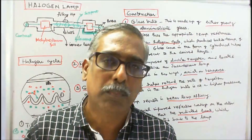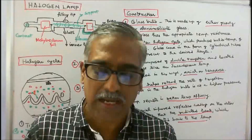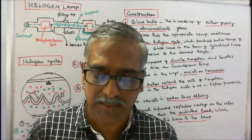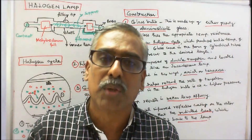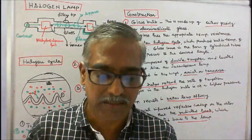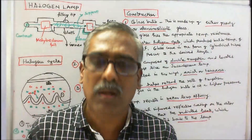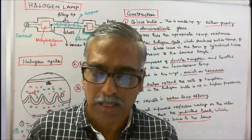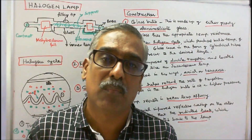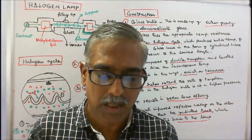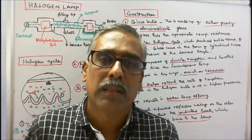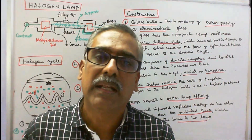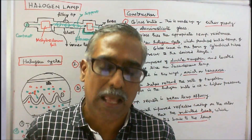Halogen bulbs produce light that is whiter and brighter, use less energy, and have a longer life than standard incandescent bulbs of the same voltage.